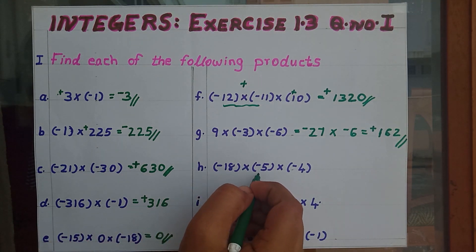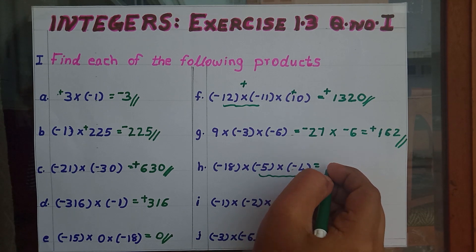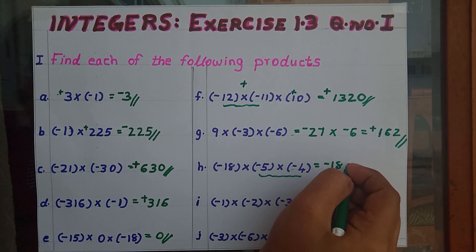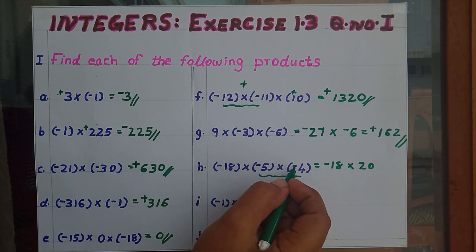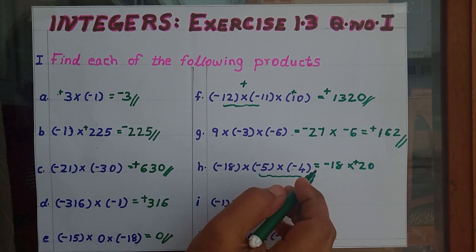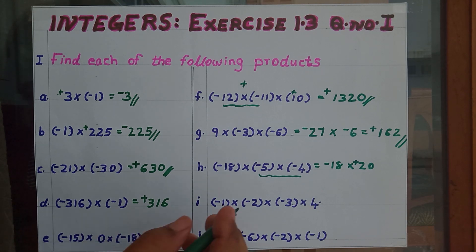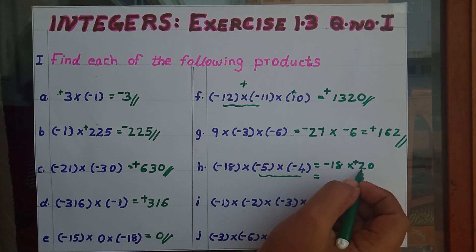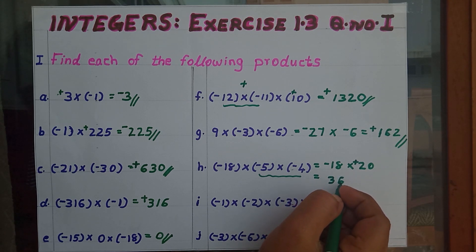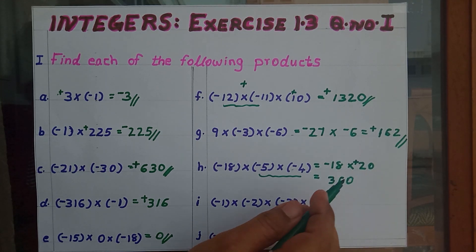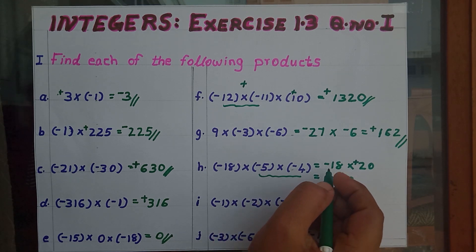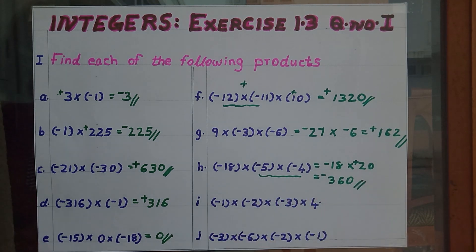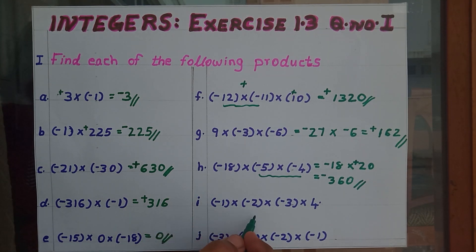Then minus into minus gives plus, so positive 162 is our answer. Next: minus 18 into minus 5 into minus 4. Associating the first two numbers: minus 5 into minus 4 gives positive 20. Then minus 18 into positive 20 — 18 into 20 is 360. Minus into plus gives minus, so minus 360 is our answer.